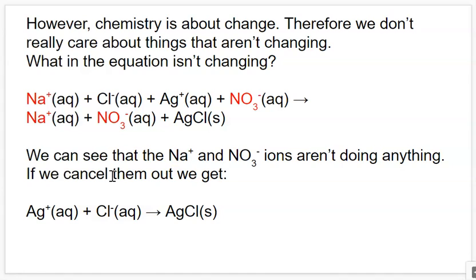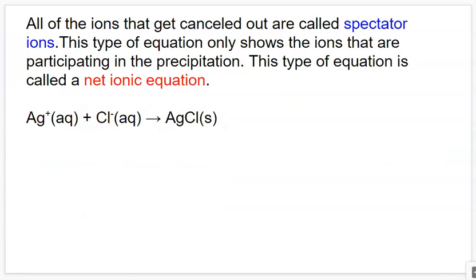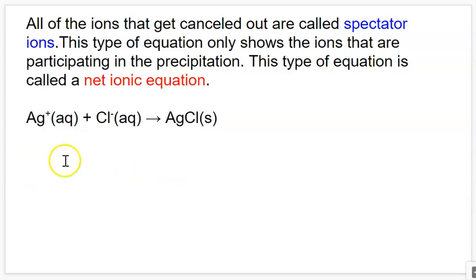We can take note of these as the ions in solution that aren't doing anything and cancel them out to focus on the actual reaction that's happening. So I'm going to delete those ions from the equation, and what we end up with is silver plus ions plus chloride ions making silver chloride. Even though the sodium and nitrate ions were there in the solution, they weren't part of the reaction itself. Those ions that weren't part of the reaction we call spectator ions — like spectators at a sports game, watching but not part of it. What we end up with once we delete those spectator ions is called a net ionic equation, which always shows the actual chemistry occurring. So even though we had silver nitrate and sodium chloride being mixed, the actual chemistry was that silver ions and chloride ions combined to make insoluble solid silver chloride.